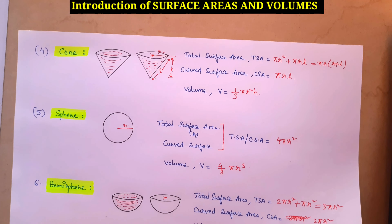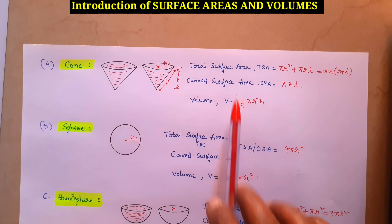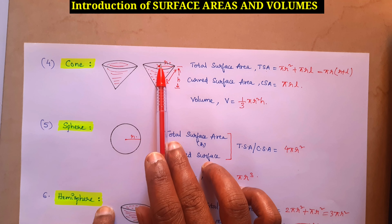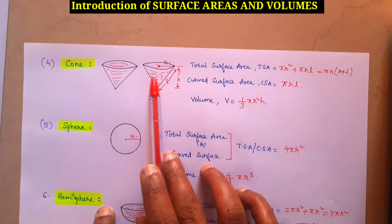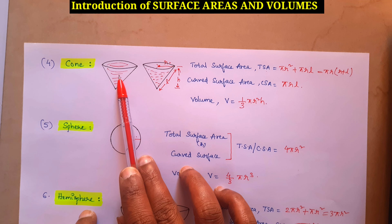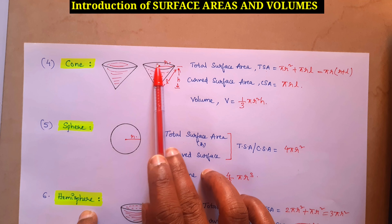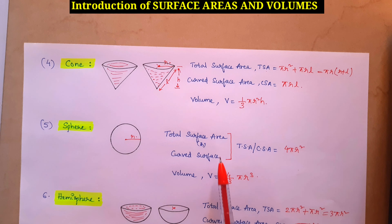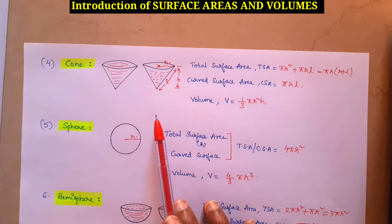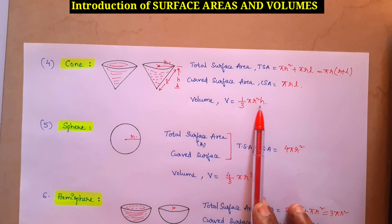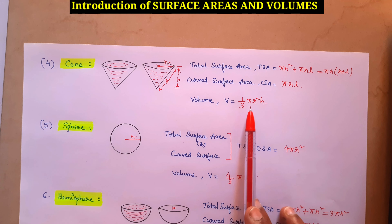For cone: curved surface area = πRL. Total surface area = πR² + πRL = πR(R + L). Volume = (1/3)πR²H, which is one third the volume of a cylinder πR²H.